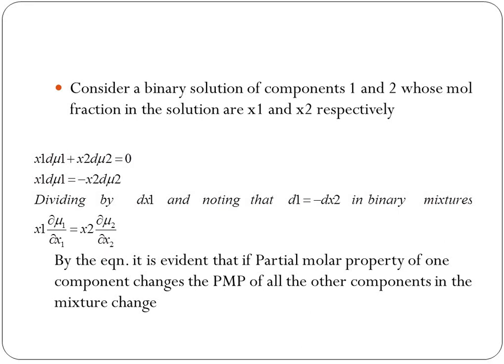From the previous equation, Σ(xi dμi) = 0, if you take a binary system, that means x1 dμ1 + x2 dμ2 = 0. Since dx1 = -dx2, we can write this equation as x1(dμ1/dx1) = x2(dμ2/dx2).